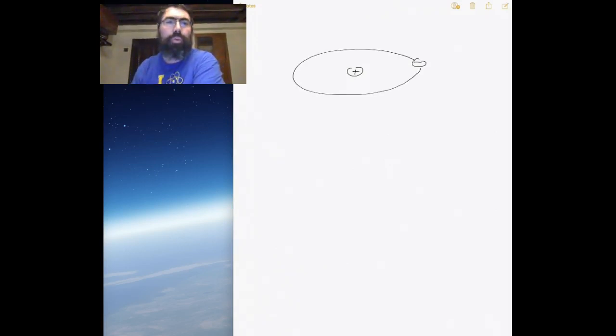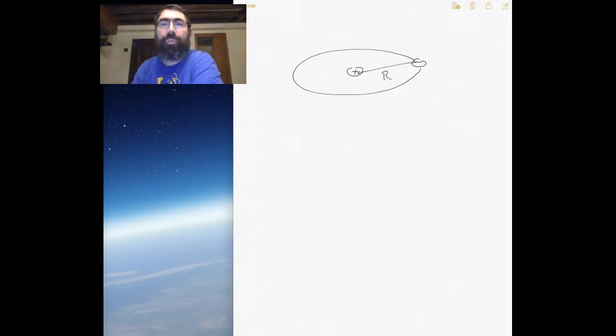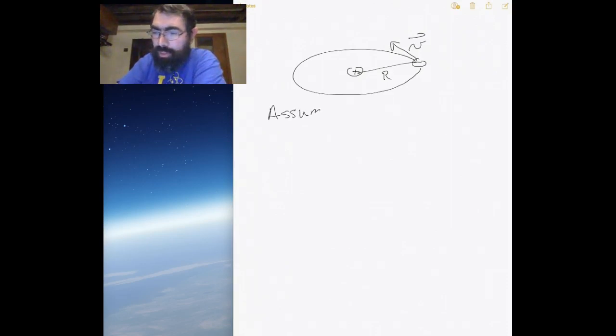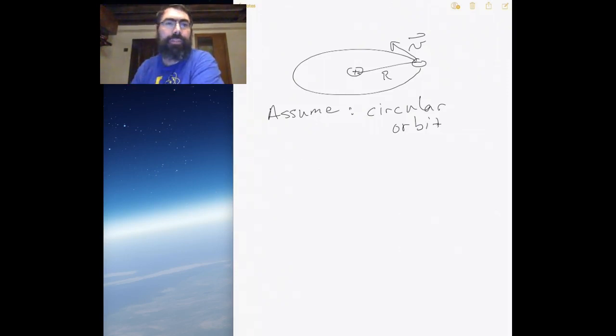Let's look at the effect of an external magnetic field on an atomic orbit. Previously we looked at the effect of an external field on just a current; now let's see what happens when we apply it to the atom. The atom has a positive nucleus with a negative electron orbiting around it. The distance is the radius of the orbit, capital R, and it has a tangential velocity — we'll assume a circular orbit.